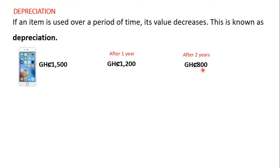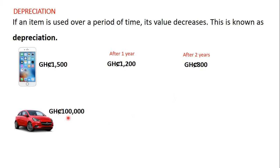Let's consider another example. Mr. Ammo bought this car for 100,000 GHS. After using the car for one year, if he decides to sell it he can't sell it at the same price he bought it. So he will have to reduce the price of the car — after the first year he would sell it around 98,000 GHS.